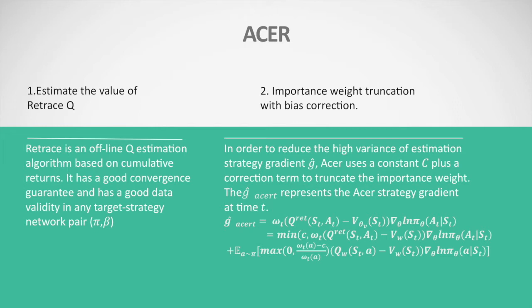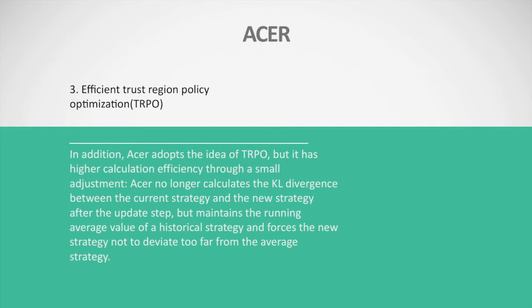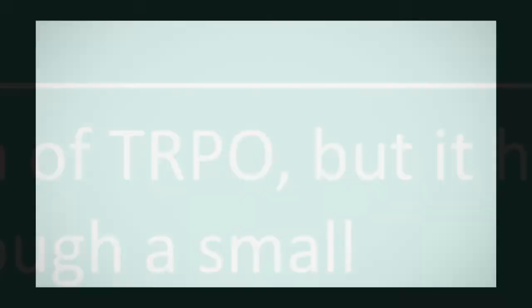The formula represents the ACER strategy gradient at time t. The third improvement is efficient trust region policy optimization. ACER adopts the idea of TRPO but with higher computational efficiency. Through a small adjustment, ACER no longer calculates the KL divergence between the current strategy and the new strategy after the update step. Instead, it maintains a running average of historical strategies and forces the new strategy not to deviate too far from that average.